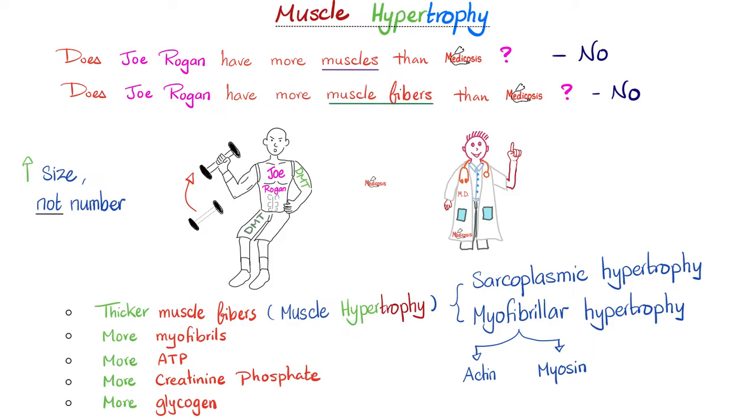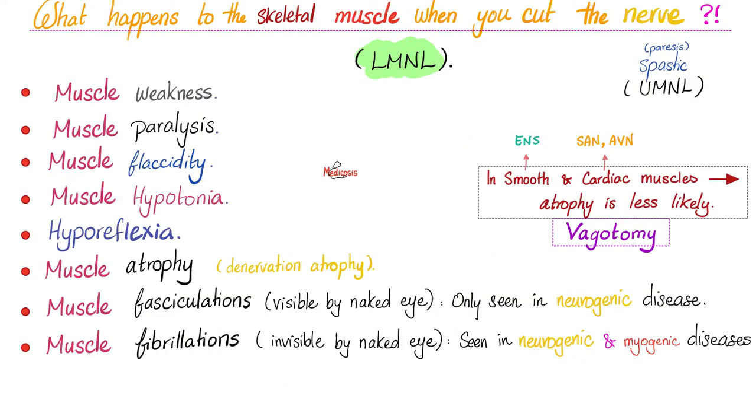Okay, Medicosis, so you said hypertrophy of muscle fibers. Can you tell me more? Well, it's hypertrophy of the sarcoplasmic reticulum and hypertrophy of actin and myosin. To learn more about these proteins, watch my videos on muscle contraction.